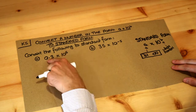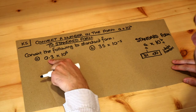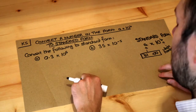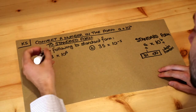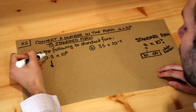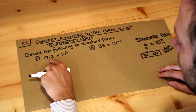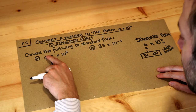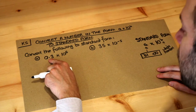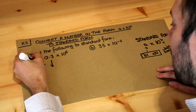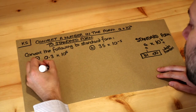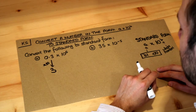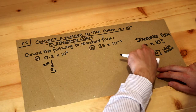Now these numbers are not between 1 and 10 — this one is less than 1, and this one is more than 10. So what we need to do is multiply or divide by 10 until it is between 1 and 10. We need this first one to be bigger, so if we multiply it by 10, it will now be 3, and that is a number between 1 and 10. That's great.